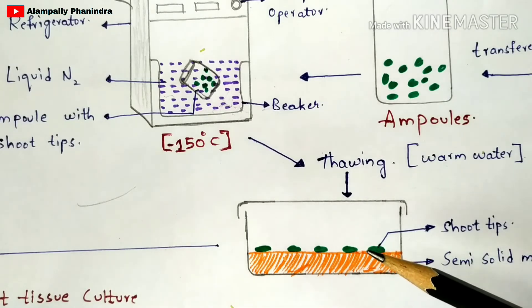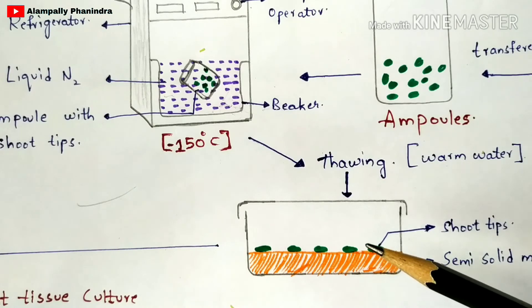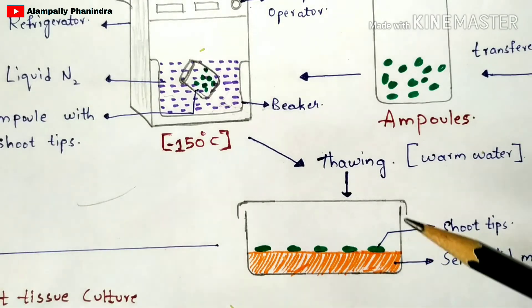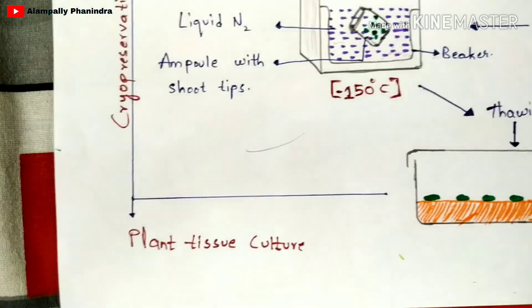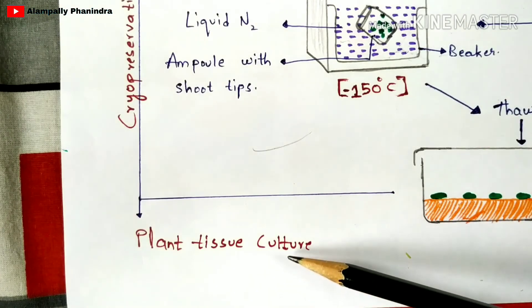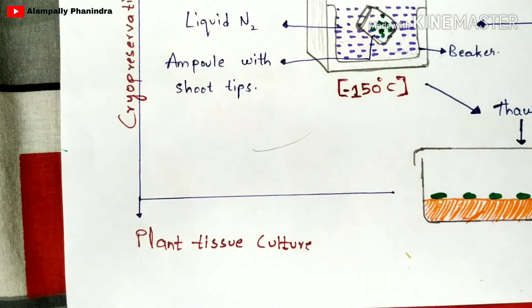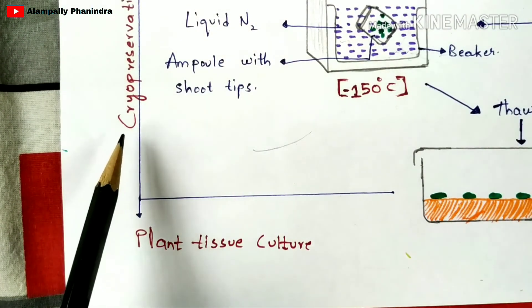These shoot tips are then placed in culture medium through the tissue culture method, so that they develop into callus. From the callus, a new plant is formed. This process is called plant tissue culture technique. After this, the material either undergoes tissue culture to form a new plant, or it gets stored again through cryopreservation — the total life cycle repeats.